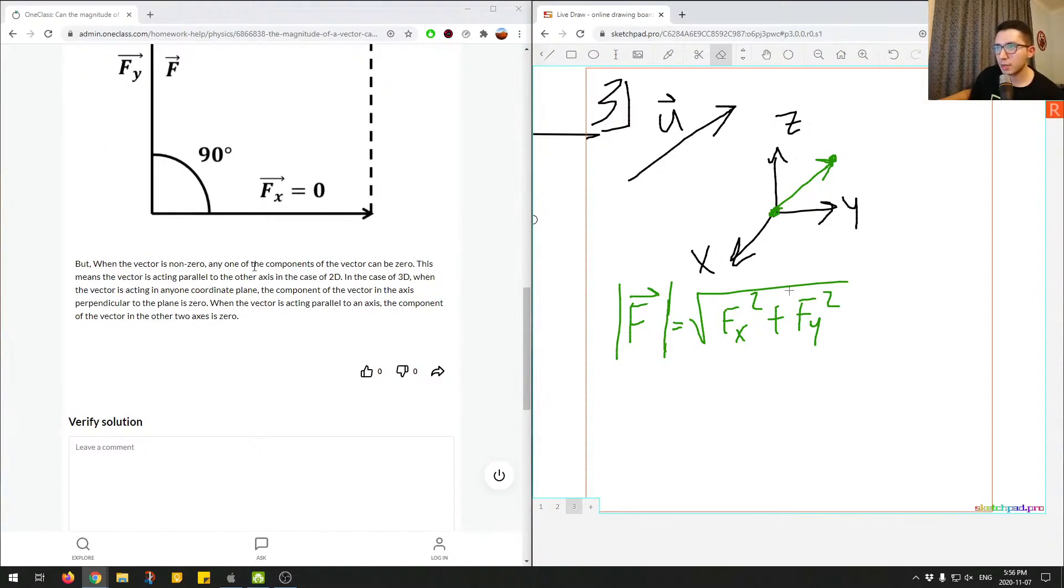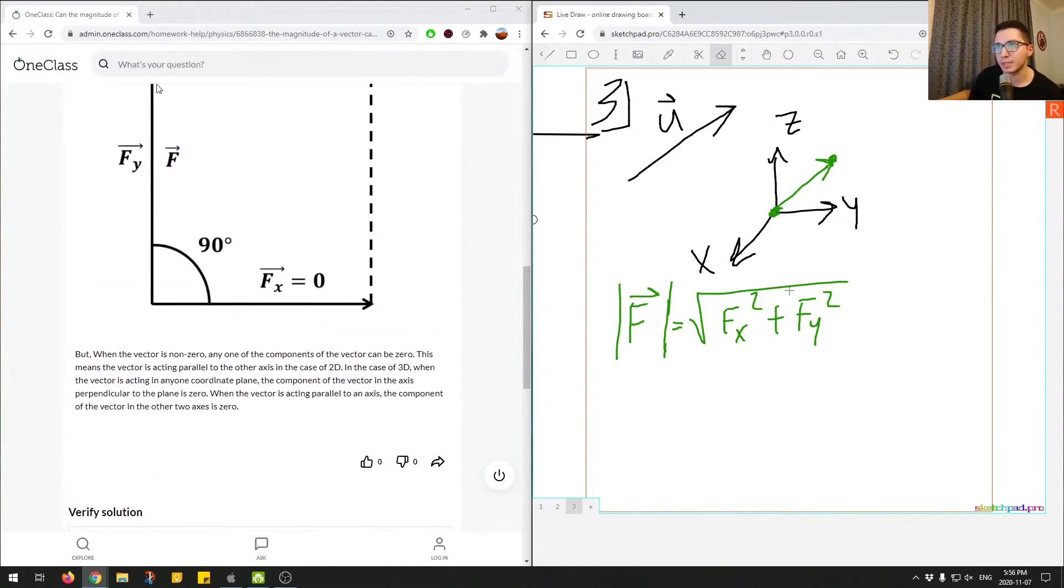When the vector is non-zero, any one of the components of the vector can be zero. This means that the vector is acting parallel to the other axis. So that's what we see here in this example, and the same thing in the case of a 3D coordinate system.